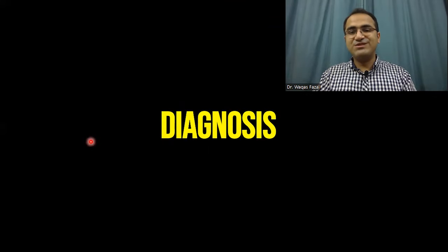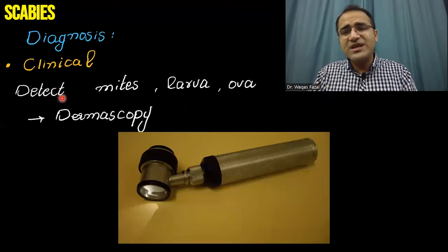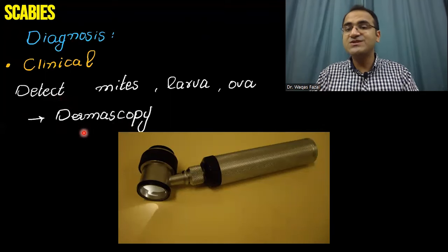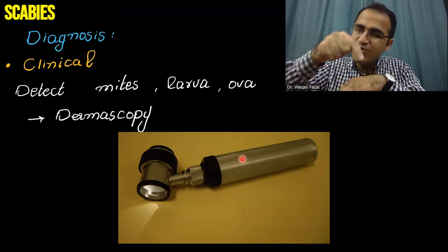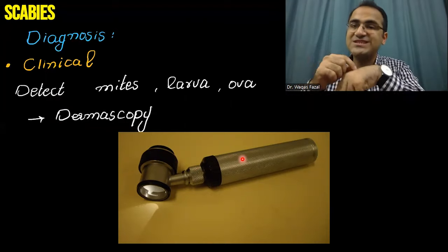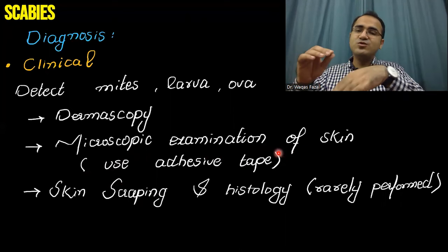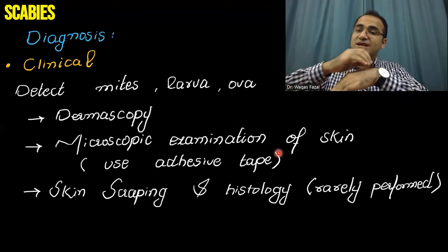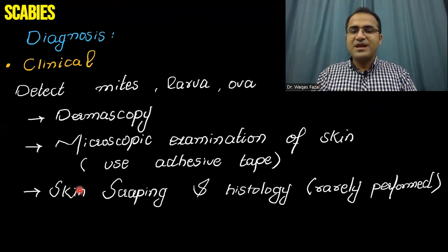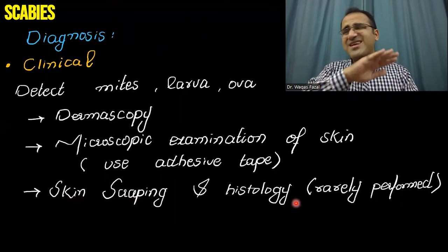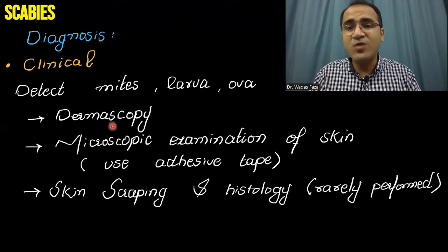The diagnosis of scabies is mainly clinical — you do not need any investigations to prove scabies infection. However, if needed, dermoscopy can be used: a dermascope is placed over the suspected area to visualize the mite in the superficial skin. Microscopic examination using an adhesive tape lifted from the itchy area can also be done, and skin scrapings and histology are rarely performed.